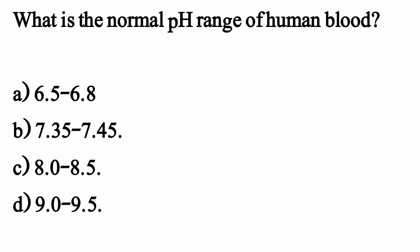What is the normal pH range of human blood? The correct option is Option B: 7.35 to 7.45.